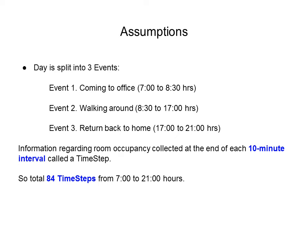Before we move on to the approach, let us look at some assumptions. A day is split into 3 events: Event 1 is coming to the office, from 7 a.m. to 8:30 a.m. Event 2 is walking around in the office, moving from one room to another, from 8:30 a.m. to 5 p.m. Event 3 is returning home, from 5 p.m. to 9 p.m.